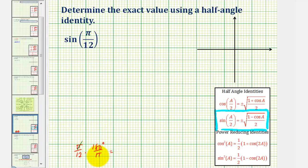Pi over 12 times 180 degrees divided by pi. Notice how the pi's would simplify out. We'd be left with 180 degrees divided by 12 equals 15 degrees. But for practice, let's go ahead and leave this in terms of radians.